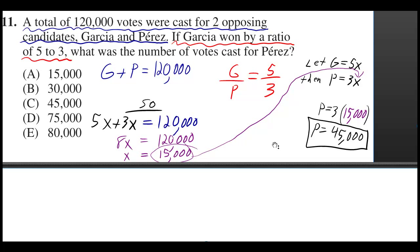A total of 120,000 votes were cast for two opposing candidates, Garcia and Perez. If Garcia won by a ratio of 5 to 3, what was the number of votes cast for Perez?